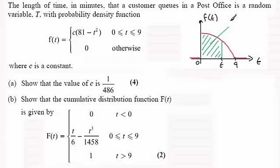So this would be F of T. F of T then is equal to the probability of T being less than or equal to T.